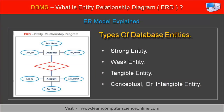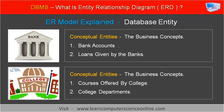The third entity type is tangible entity. An entity is said to be a tangible entity when it has a physical existence that can be recorded in terms of its attributes. The fourth entity type is conceptual entity. An entity such as bank account or mortgage loan is said to be a conceptual or intangible entity when it does not have a physical existence, but is a valid business concept that can be recorded in terms of its attributes.